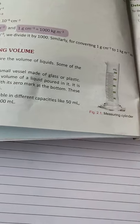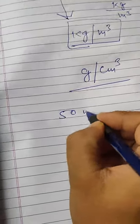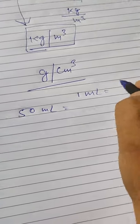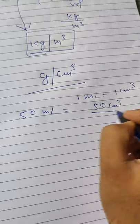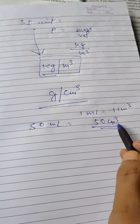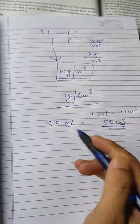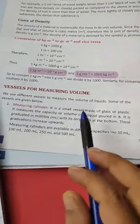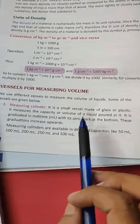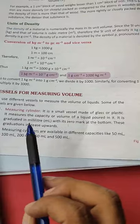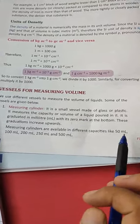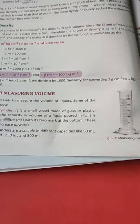The measuring cylinder gives capacity in ml. Remember: 1 ml equals 1 cm cube, so 50 ml equals 50 cm cube — you can convert directly. The measuring cylinder is a small vessel made of glass or plastic; it measures the volume of liquid poured in. It is graduated in milliliters with zero at the bottom, and graduations increase upward. It comes in sizes like 50 ml, 100 ml, 200 ml, 250 ml, and 500 ml.